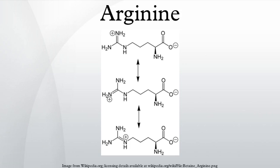The amino acid side chain of arginine consists of a 3-carbon aliphatic straight chain, the distal end of which is capped by a complex guanidinium group. With a pKa of 12.48, the guanidinium group is positively charged in neutral, acidic, and even most basic environments,